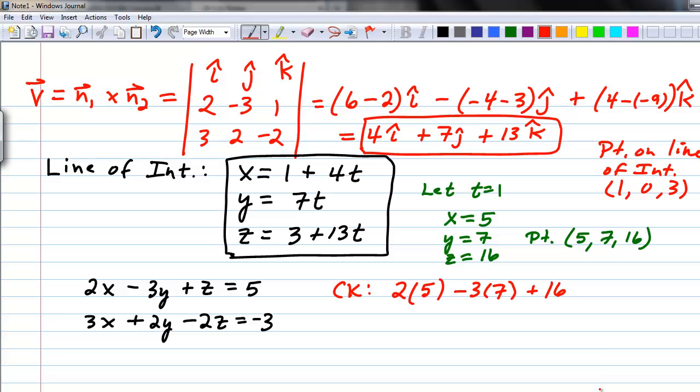Let's calculate this. We get 10 minus 21 plus 16. If we add the two positive values, that gives us 26 minus 21, which is 5. That's what it's supposed to be. Check.